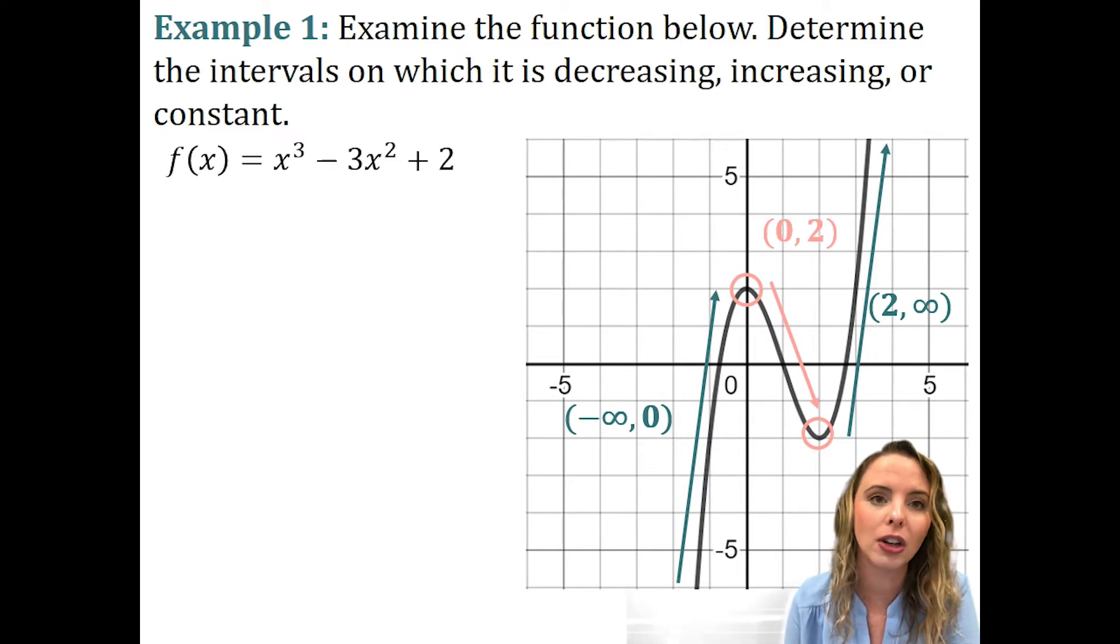Now, if you notice on all three of these intervals, we're using parentheses, not brackets because the slope of our line at two and at zero is zero. At our max and our min, our point is going to be flat. I know that's hard to see, but if you end up taking calculus, we'll dive into that more and you'll learn about it then.